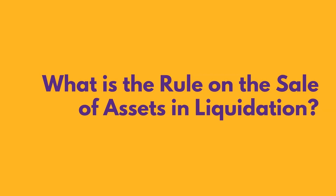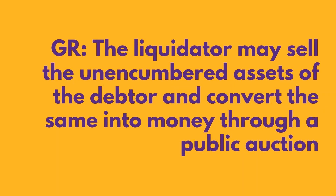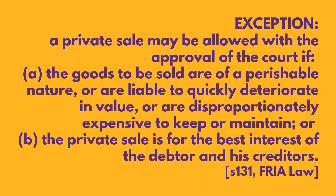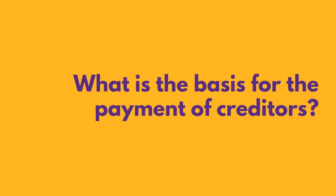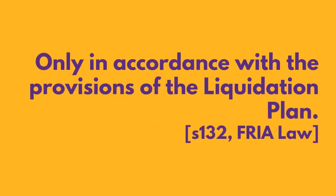What is the rule on the sale of assets in liquidation? General rule: the liquidator may sell the unencumbered assets of the debtor and convert the same into money through a public auction. As an exception, a private sale may be allowed with the approval of the court if: first, the goods to be sold are of a perishable nature and are liable to quickly deteriorate in value or are disproportionately expensive to keep or maintain; or second, the private sale is for the best interest of the debtor and his creditors. What is the basis for the payment of creditors? Only in accordance with the provisions of the liquidation plan.